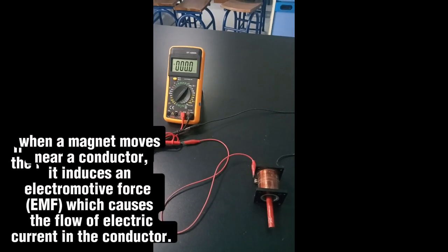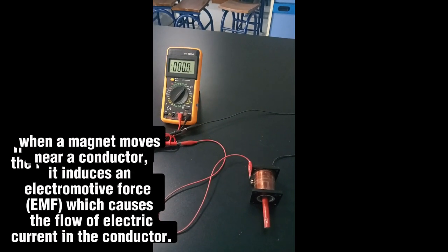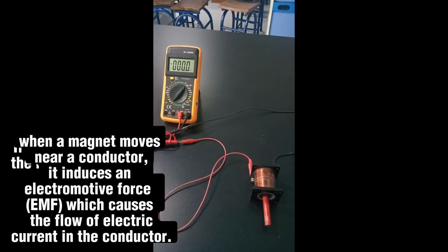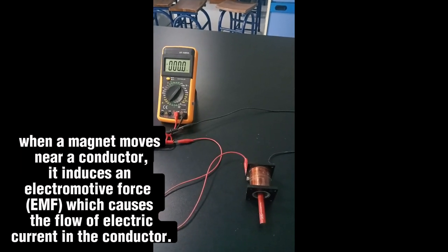When a magnet moves near a conductor, it induces an electromotive force (EMF) which causes the flow of electric current in the conductor.